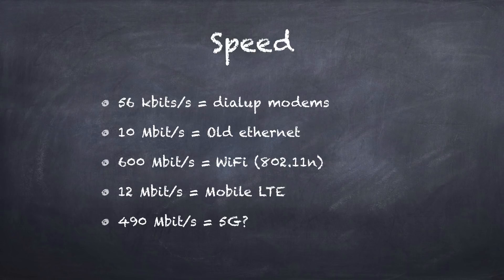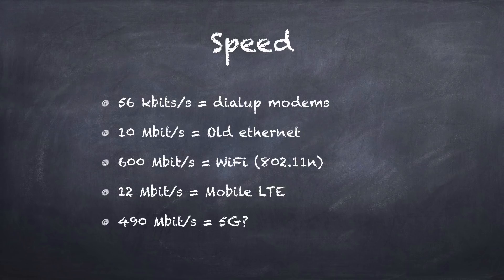Let's look at some speeds we've dealt with in the past. Dial-up modems, if you remember those, usually ran around 56 kilobits per second — kilo meaning thousands of bits, where a bit is a one or a zero. That was the speed for transferring data using modems. If you used Ethernet cables to connect computers before Wi-Fi, you were usually doing speeds of about 10 megabits per second — megabits being 1000 kilobits.